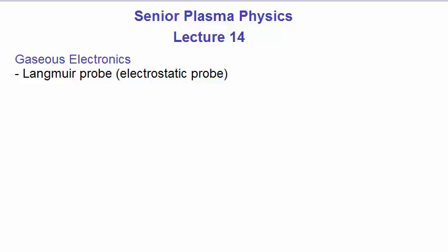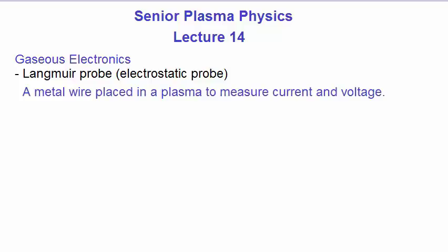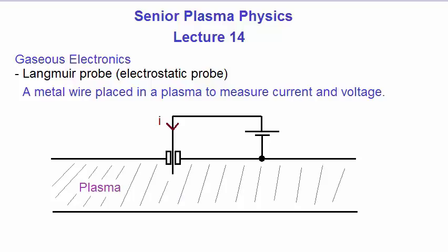It's one of the simplest and most useful diagnostics, because it consists of a metal wire placed in a plasma and a measurement is carried out of the current and voltage characteristics of that plasma. Imagine we have a metal chamber with a plasma generated inside it.